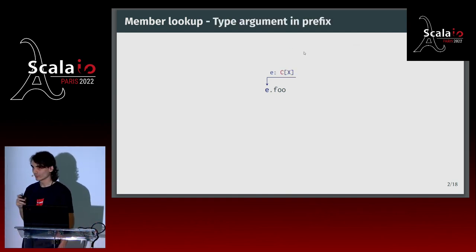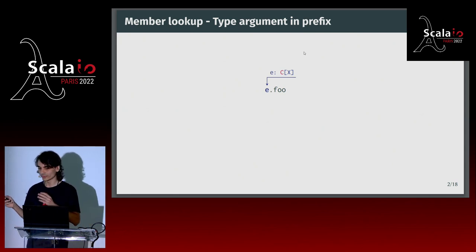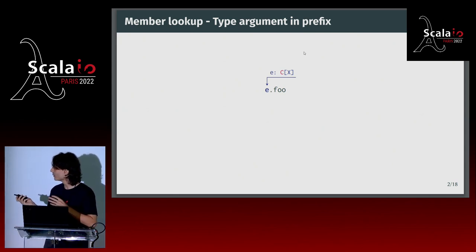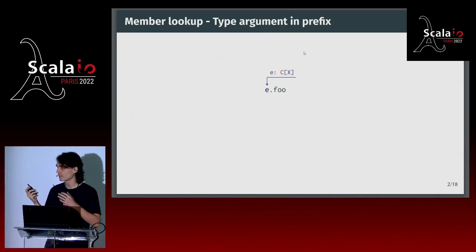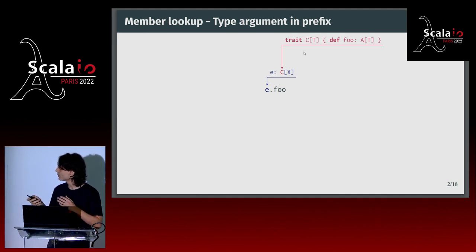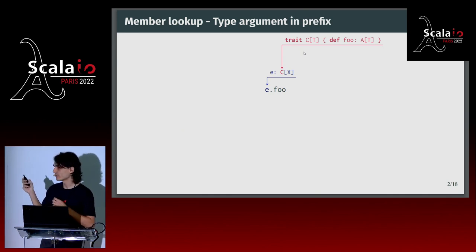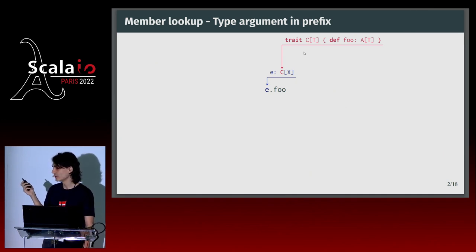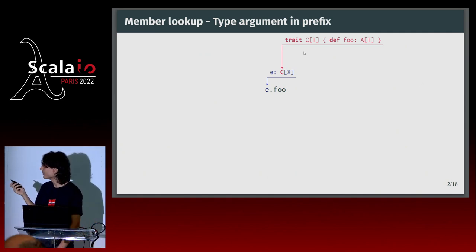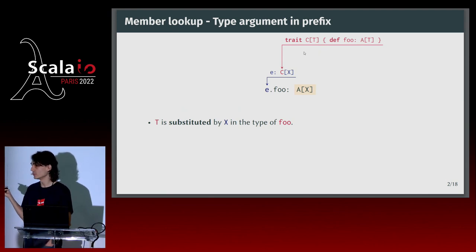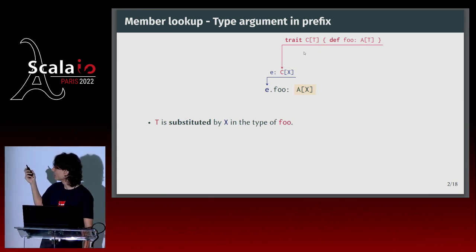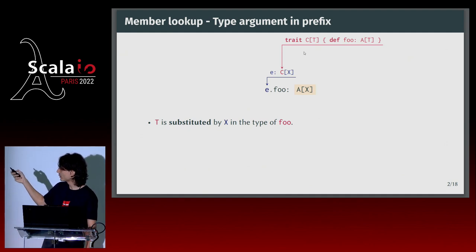Now let's go with a slightly more complicated example. The prefix e has type C of X, where C is some parameterized type. To figure out the type of e.foo, we look into the definition of C, and find the type of foo. But now it's a little more complicated, because the type of foo is A of T, and T is a type parameter of C. So the type of e.foo is A of X — we're doing a type substitution, replacing T in the definition of foo by X because of the argument passed in the prefix.